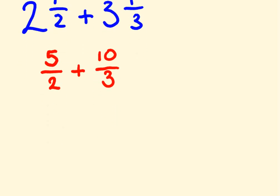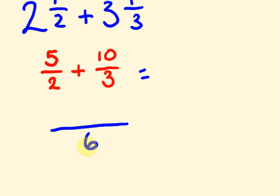So how do we deal with this now? To get the bottom number, rather than working out lowest common denominators, the simplest way is just to multiply the two bottom numbers together. So two times three is six. We've got the bottom number.